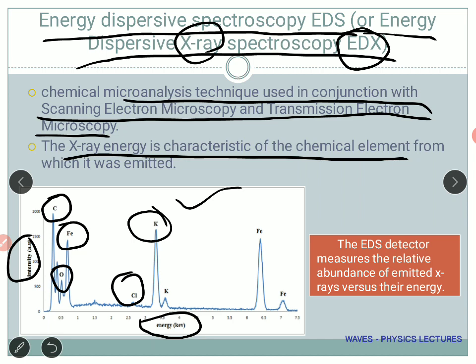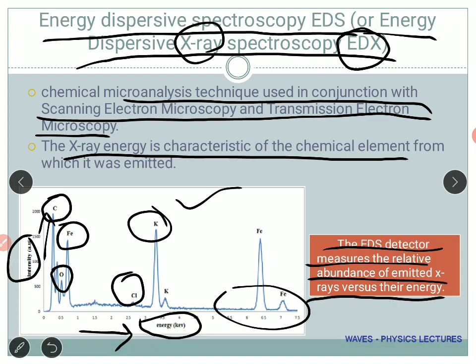The EDS detector basically measures the relative abundance of the emitted X-ray versus the energy. If the intensity is high, that means there are more X-rays emitted by that element, such as carbon. The energy is also plotted — as you go along the x-axis, the energy becomes more and more. If you consider something like carbon or oxygen, they cannot emit a high energy X-ray, so they appear at the lower energy end.